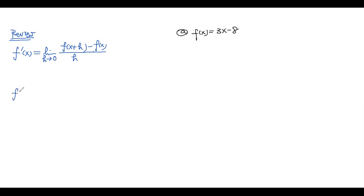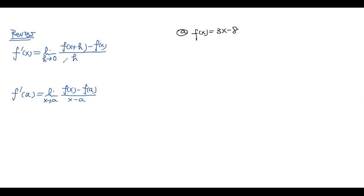If you want to find a derivative at any specific point — let's say f′(a) — then you can use this definition: the limit as x approaches a of [f(x) − f(a)] / (x − a). I like this definition because it makes things easier to calculate. Those are basically the two formulas based on the limit definition.